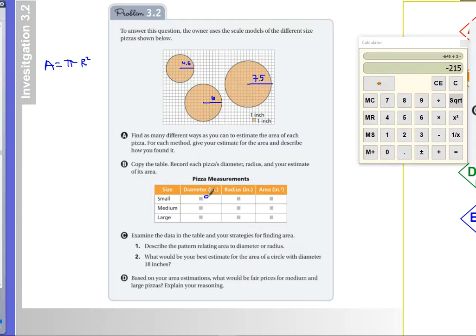Okay, so for the small, we have a diameter of 9, 12, and 15. It means our radius is 4.5, 6, and 7.5.